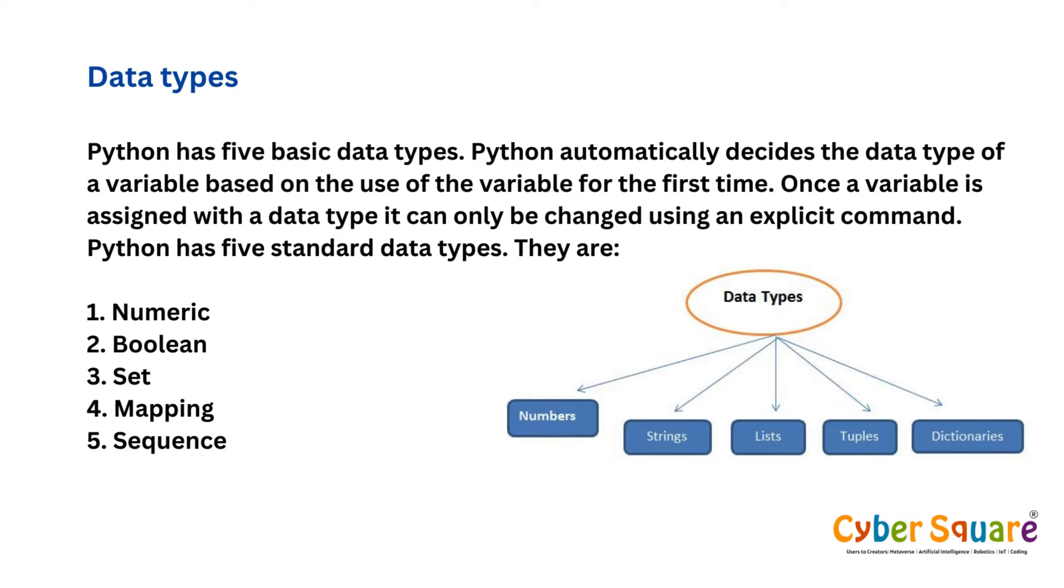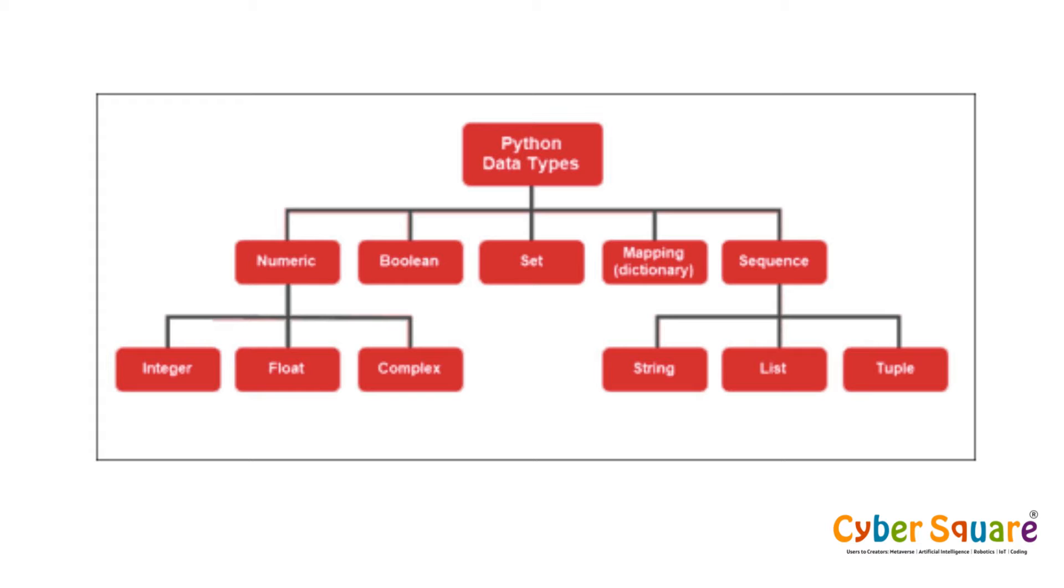Python has five basic data types. Python automatically decides the data type of a variable based on the use of the variable for the first time. Once a variable is assigned with a data type, it can only be changed using an explicit command. The five standard data types are: Numeric, Boolean, Set, Mapping, and Sequence.